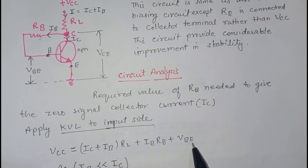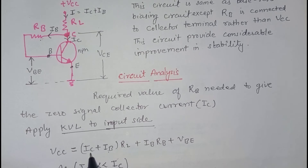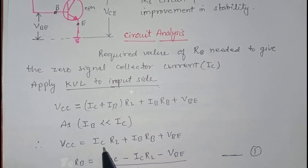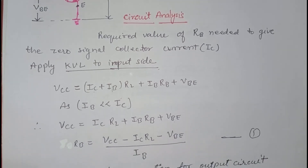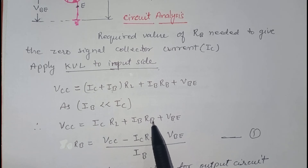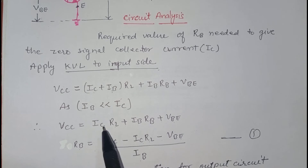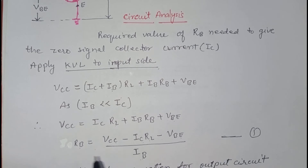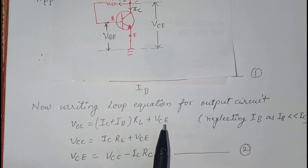This is the KVL equation for the input side. Now, since IB is much less than IC, we can neglect IB in the RL term. The equation becomes: VCC = IC·RL + IB·RB + VBE. Manipulating to find IB: IB = (VCC − IC·RL − VBE) / RB. We will mark this as Equation 1.